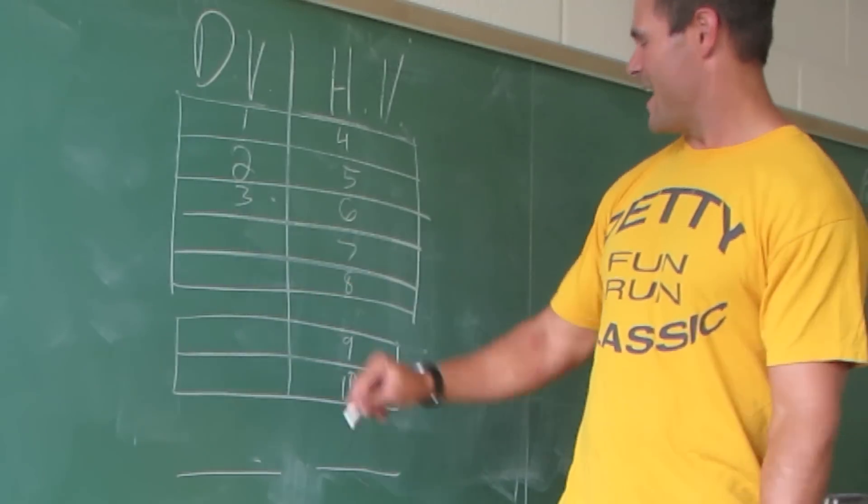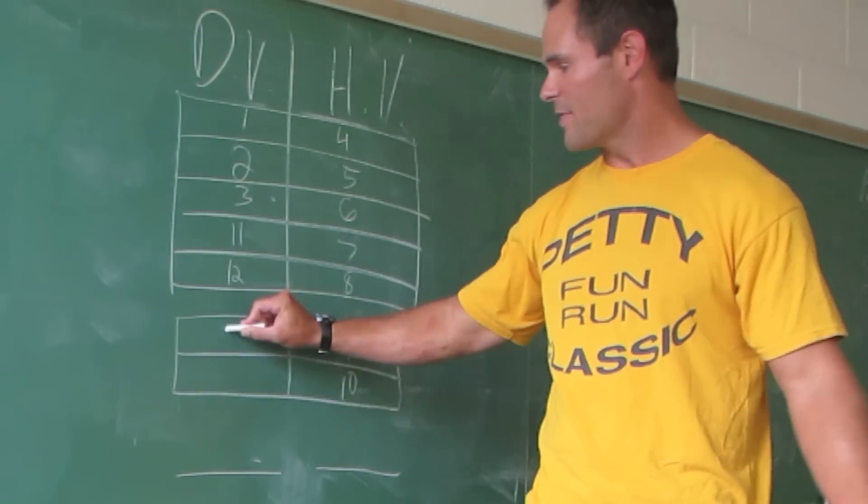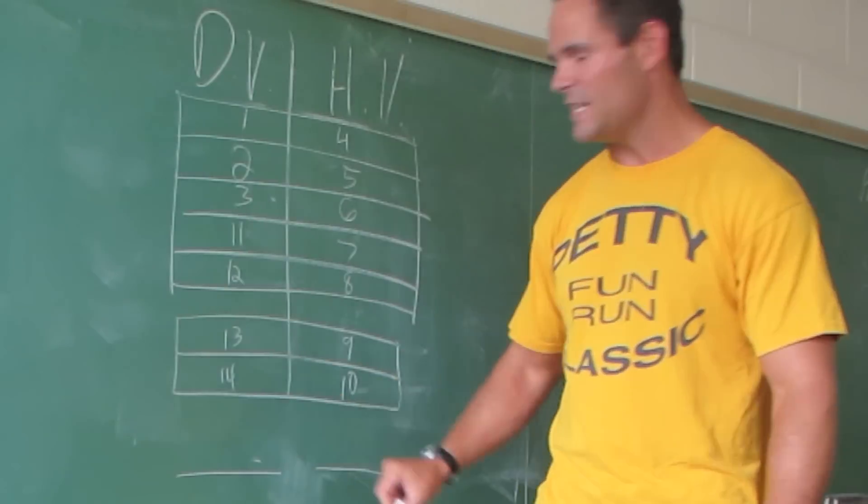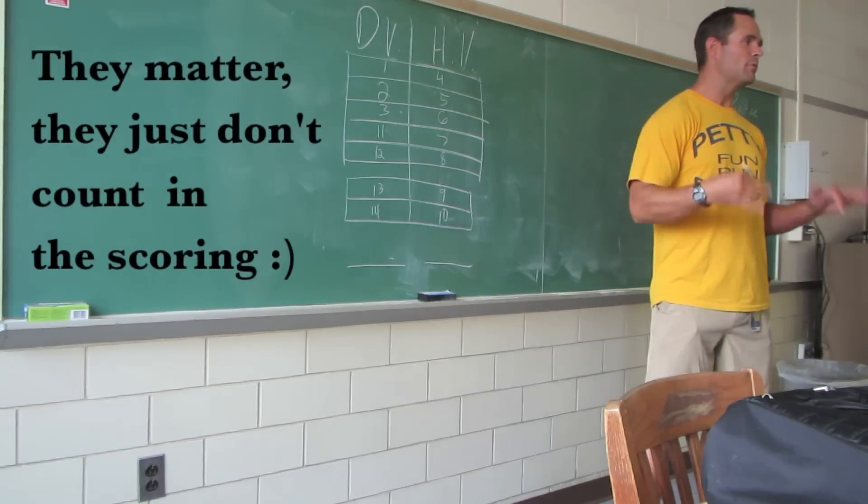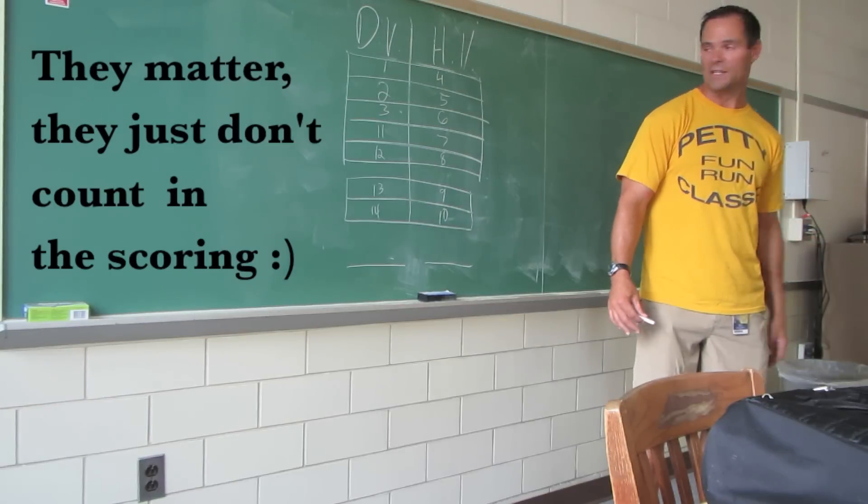So let me add that up quickly. Then DelVal gets 11 and 12. 13 and 14 don't matter. So your place is the point you get, and it's like golf. The lower score wins.